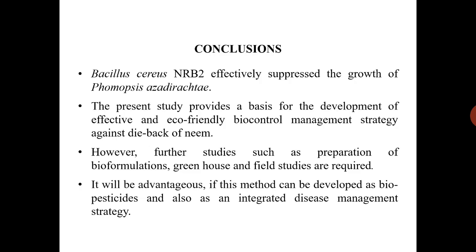Conclusions. Bacillus cereus NRB2 effectively suppresses the growth of Fomopsis azadiractae. The present study provides a basis for the development of an effective and eco-friendly biocontrol management strategy against dieback of neem. However, further studies such as preparation of bioformulations, greenhouse and field studies are required. It will be advantageous if this method can be developed as a biopesticide and also as an integrated disease management strategy.